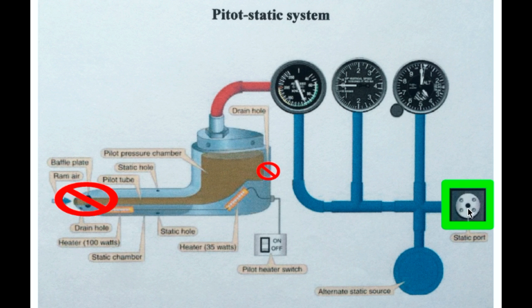In this condition, the inside of the airspeed indicator only receives ambient outside air pressure from the static port, which is still open. As you climb and air pressure decreases, the pressure within the case decreases, causing the diaphragm to expand and the airspeed indication to increase — the opposite of what would normally happen in a climb. Conversely, if you begin a descent, the air becomes progressively denser as you lose altitude.